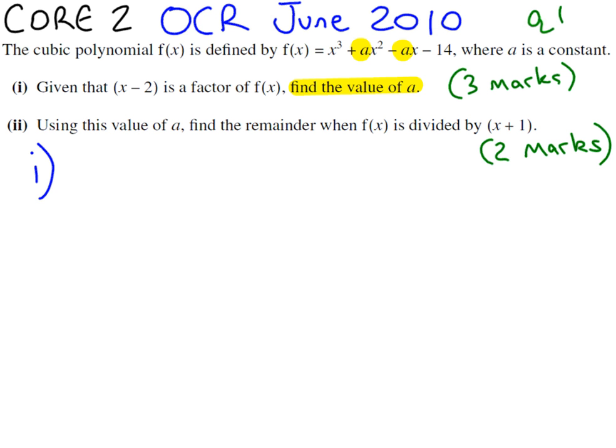So the question tells us that (x - 2) is a factor. Now if you've learned your factor theorem, that means that f(2) equals 0. So what we're going to do is substitute 2 into our equation for x. So everywhere you've got x, put 2 instead.